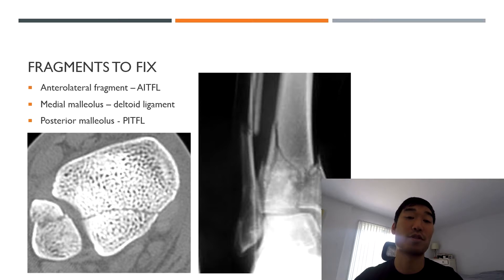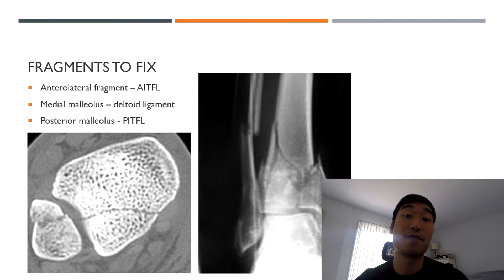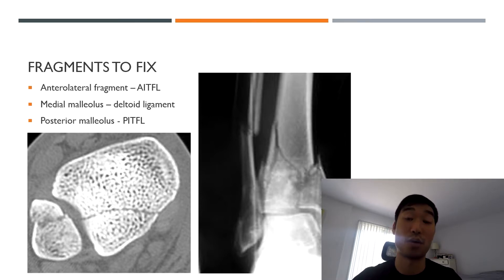It is important to know the ligaments involved because ligament attachment essentially serves as a fixation point when treating these fractures. For example, if you have a posterior malleolus fragment that is fractured, you know the PITFL is attached there, and by fixating the posterior malleolus — whether with a screw or a buttressing plate — you're basically providing two stable fixation points: one via the ligament and one via the fixation you're providing.